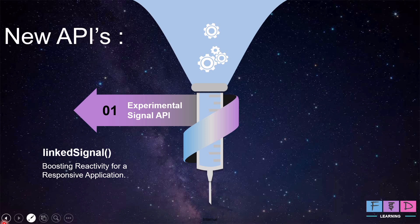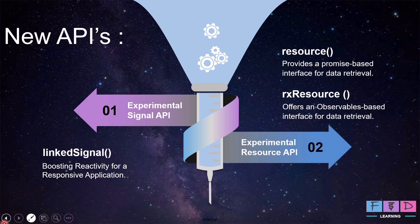To learn more about LinkedSignal, including examples and use cases, check out my video — the link is available in the description below. Next, let's talk on the new and experimental resource API. Angular 19 introduces two experimental APIs, Resource and RxResource, to simplify asynchronous data retrieval. Resource API provides a promise-based interface for data retrieval, whereas RxResource API offers an observables-based interface. These APIs aim to streamline data management, reducing complexity and improving efficiency.